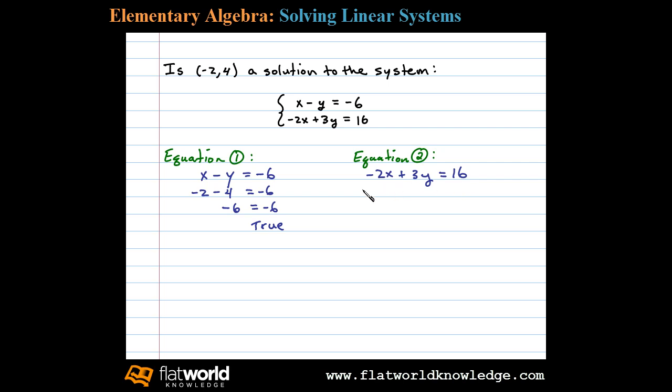Here, -2x + 3y = 16. We substitute: (-2) times (-2) plus 3 times 4. We're going to see if that equals 16. (-2) times (-2) is positive 4, plus 12,